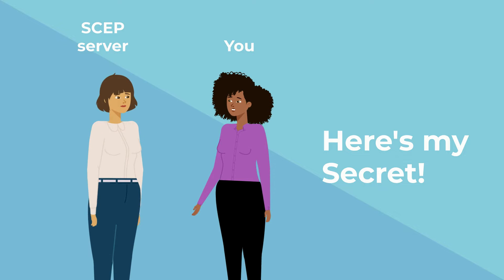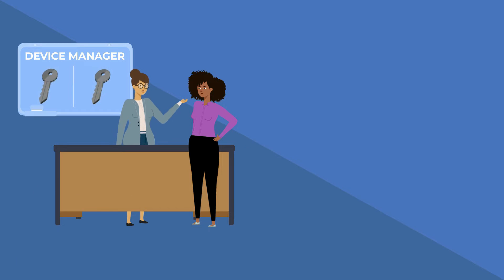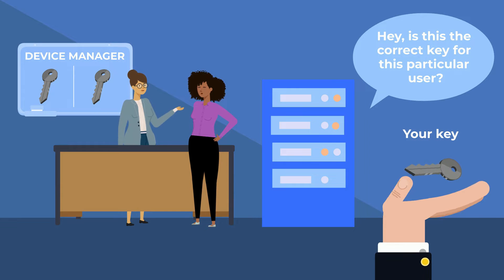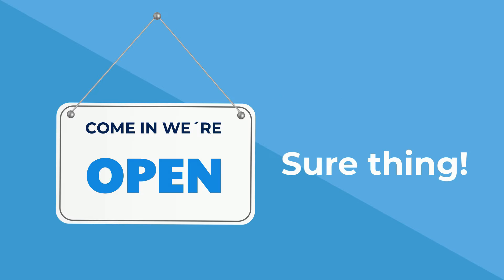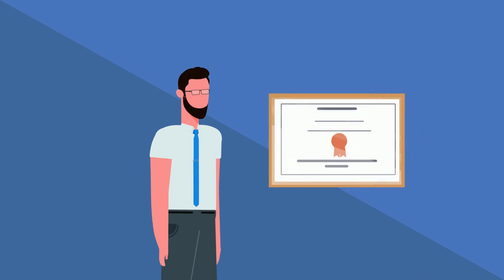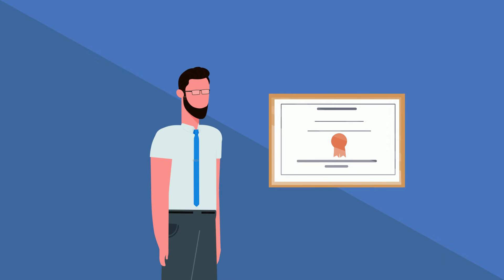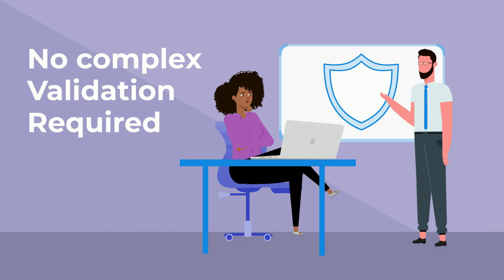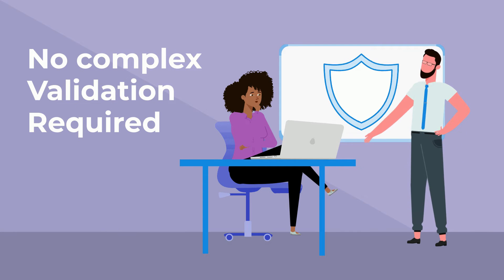The SCEP server gets your request and thinks, "Is this legit?" It checks with your device manager that the secret key matches the identity you requested. If everything checks out, it says, "Sure thing." Boom — you've got a digital certificate, without doing all the complex identity validation that a small device such as an IoT device cannot do.